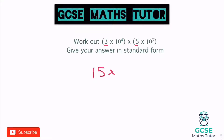We've got a power of 4 and a power of 3. When multiplying with the same base numbers — both are 10 — we can add the powers together. So 4 plus 3 equals 7. That gives us 15 times 10 to the power of 7. But this is not in standard form because 15 is not between 1 and 10.